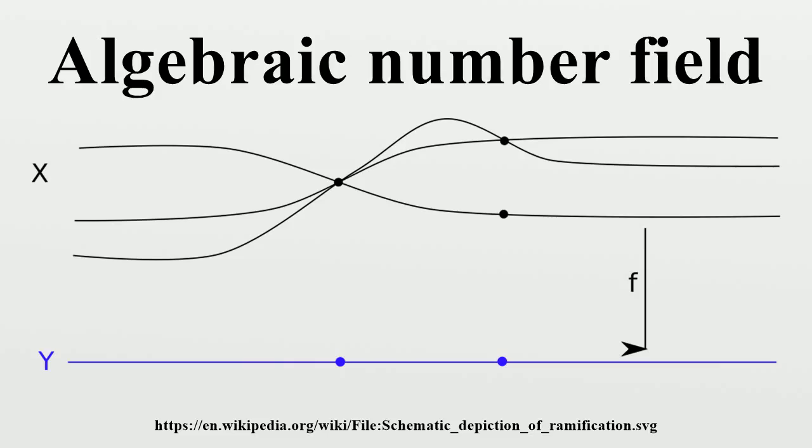A polynomial with this property is known as a monic polynomial. In general it will have rational coefficients. If, however, its coefficients are actually all integers, f is called an algebraic integer. Any integer z ∈ Z is an algebraic integer, as it is the zero of the linear monic polynomial p(t) equals t minus z. It can be shown that any algebraic integer that is also a rational number must actually be an integer, hence the name of algebraic integer.